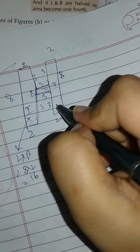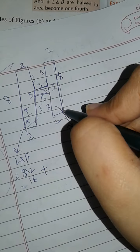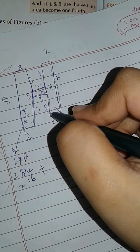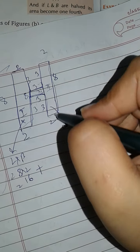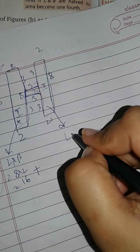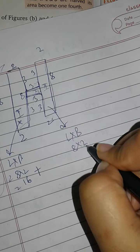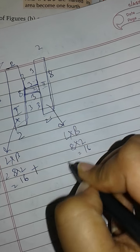Plus the second rectangle: length is 8, breadth is 2, so area is 8 into 2, which is 16. Now for the second figure, the length on each side is 3, and the total is 8. So the middle breadth is 8 minus 3 minus 3, which is 8 minus 6, which is 2.